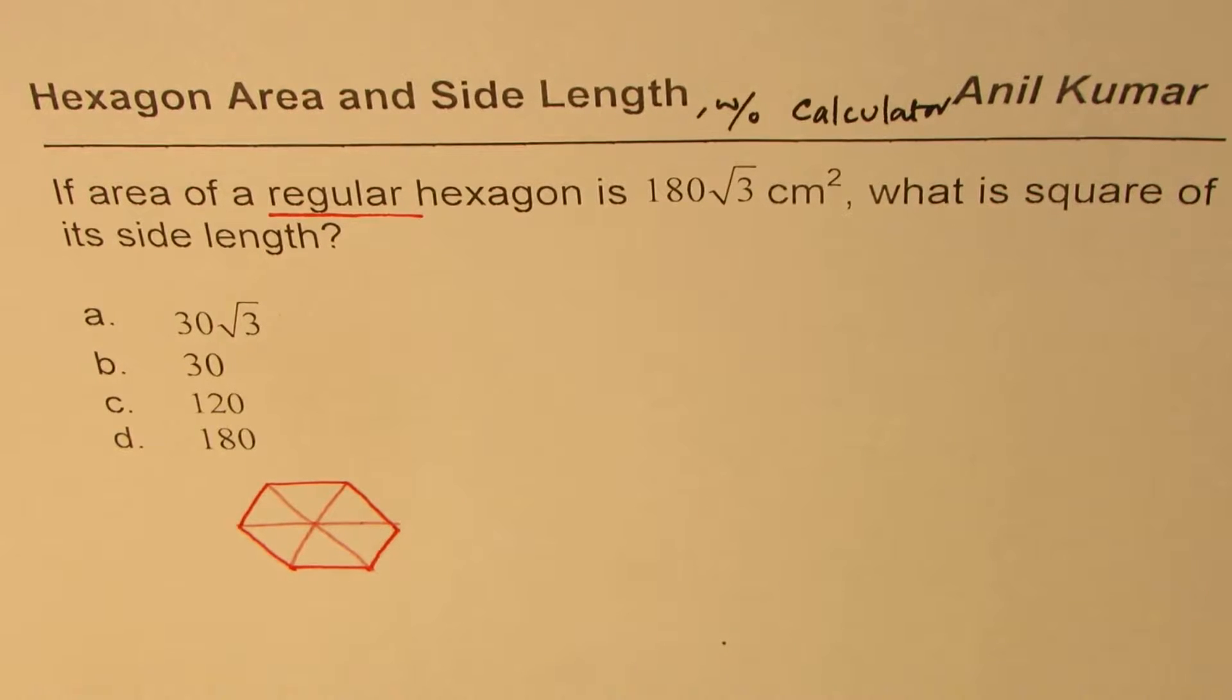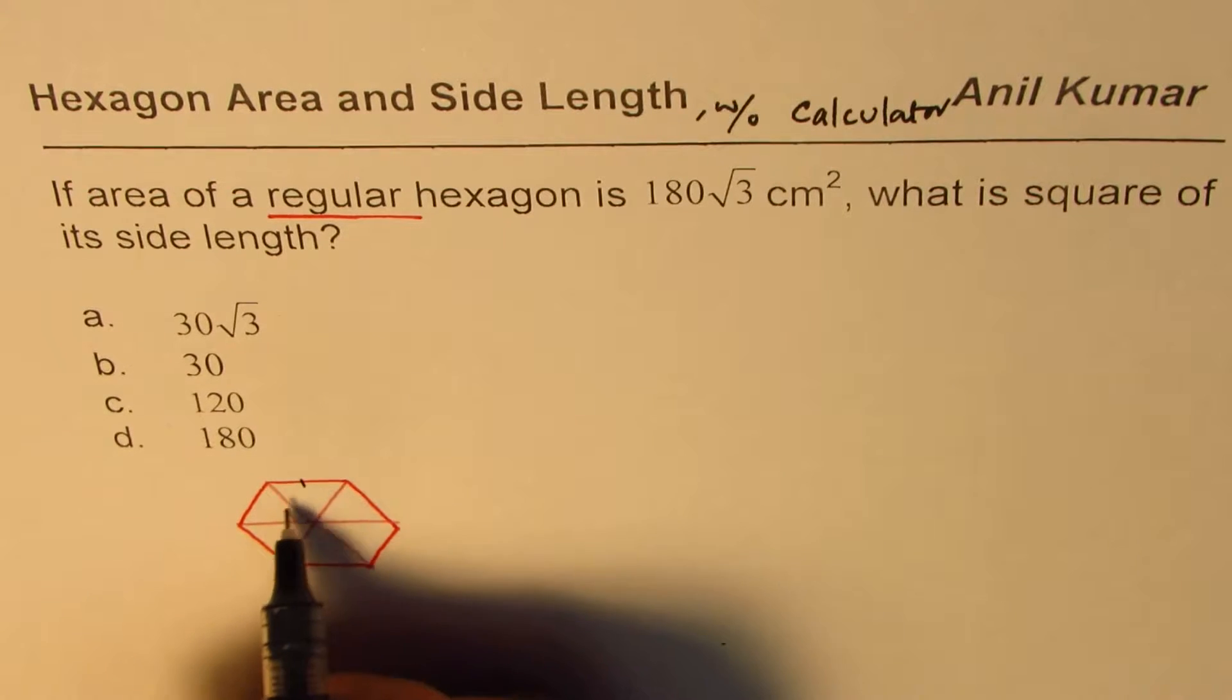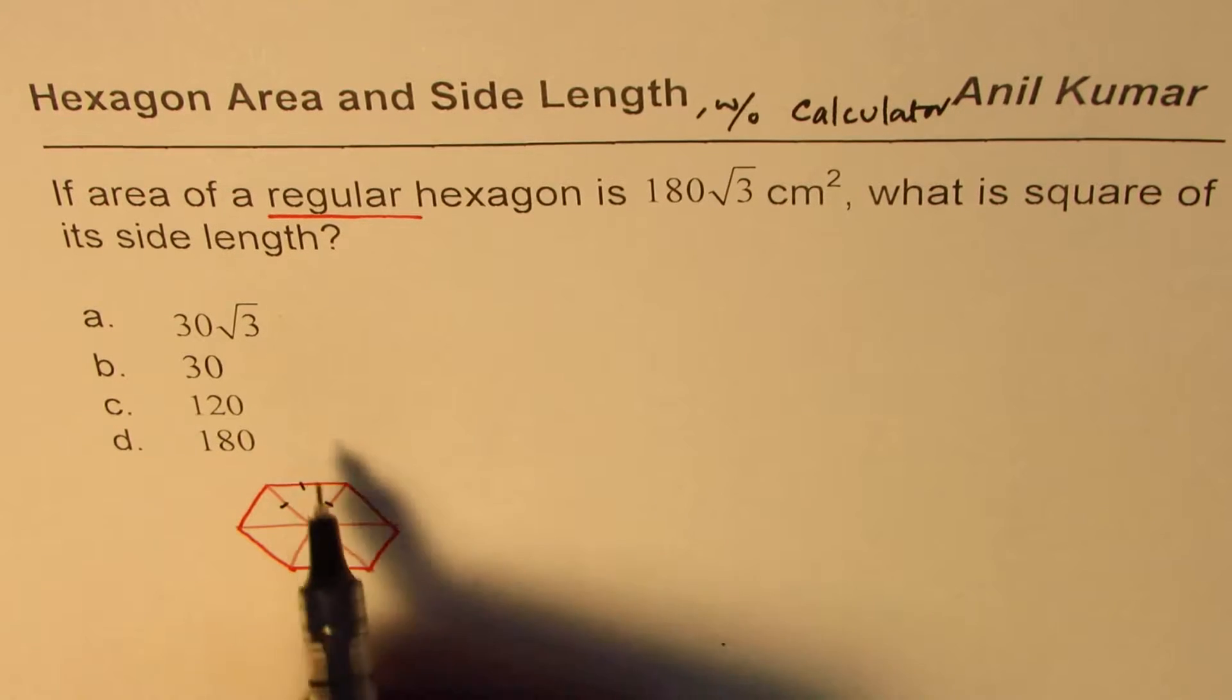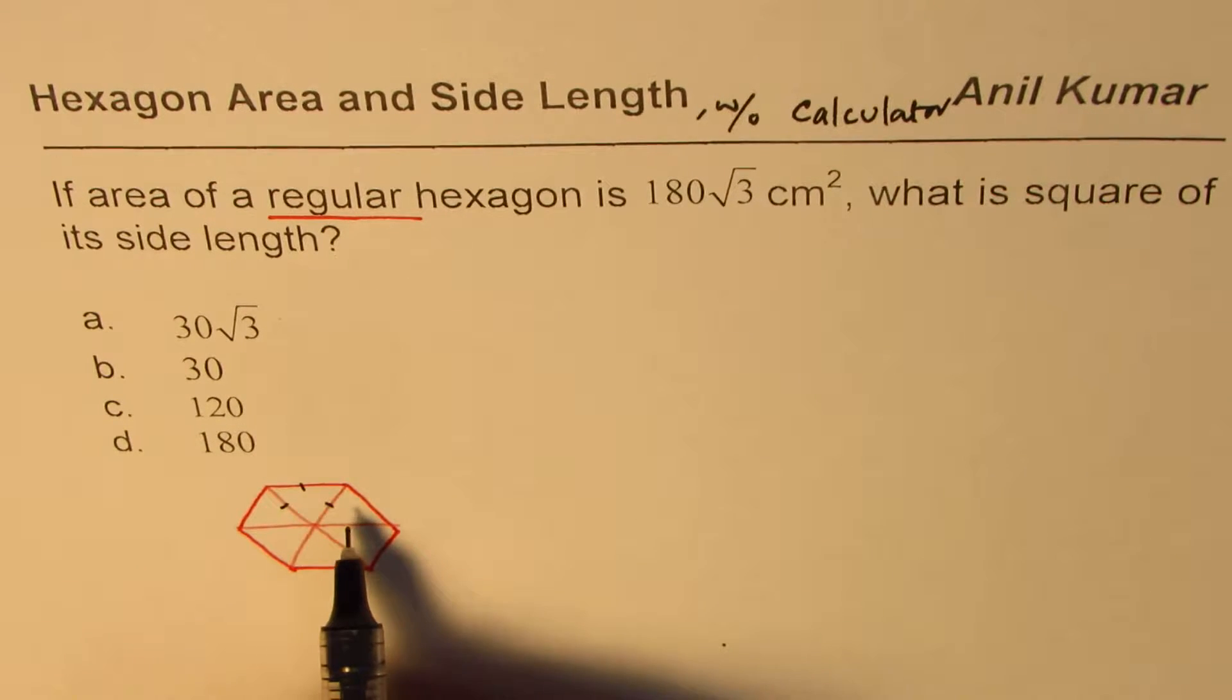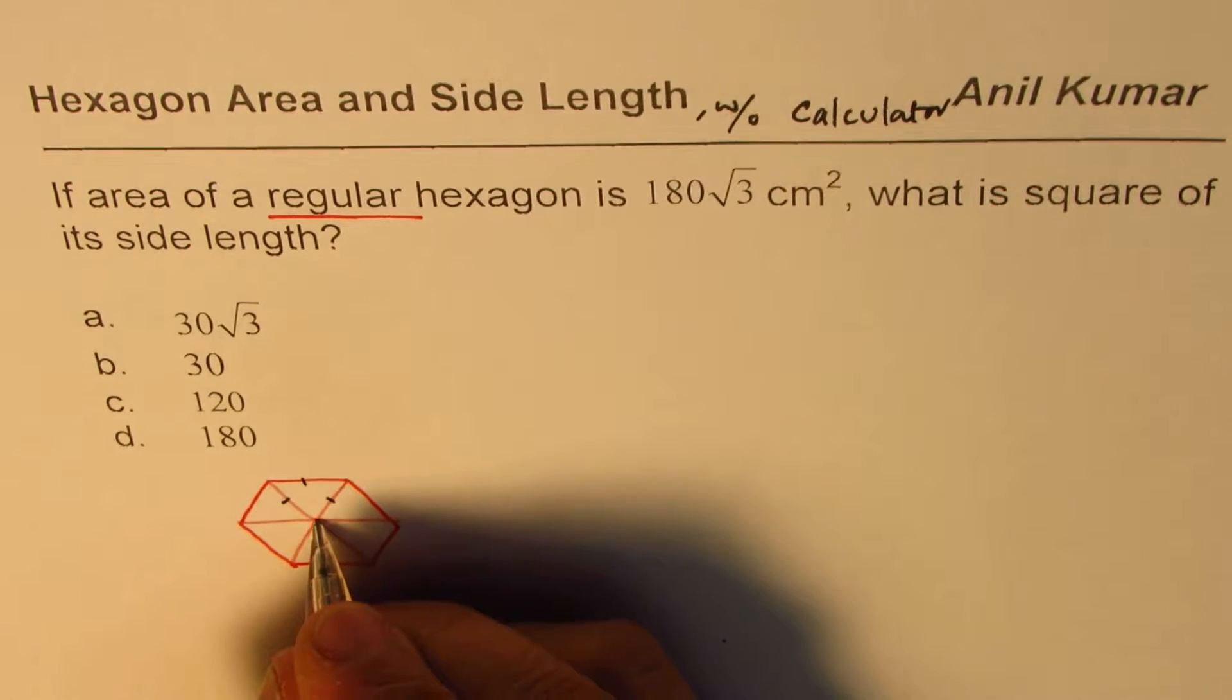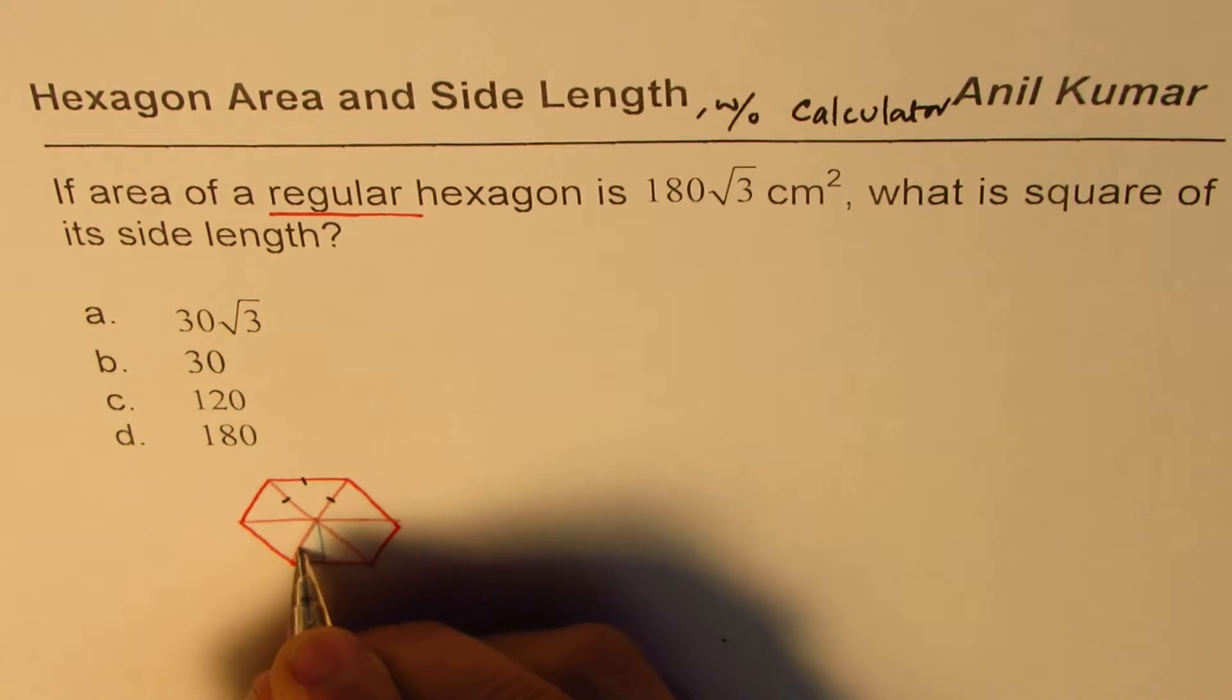So hexagon will have six triangles and all are equilateral. Now when you have equilateral triangles, you know these angles are 60 degrees. And if I kind of show you half of this triangle, then we have a special triangle here.